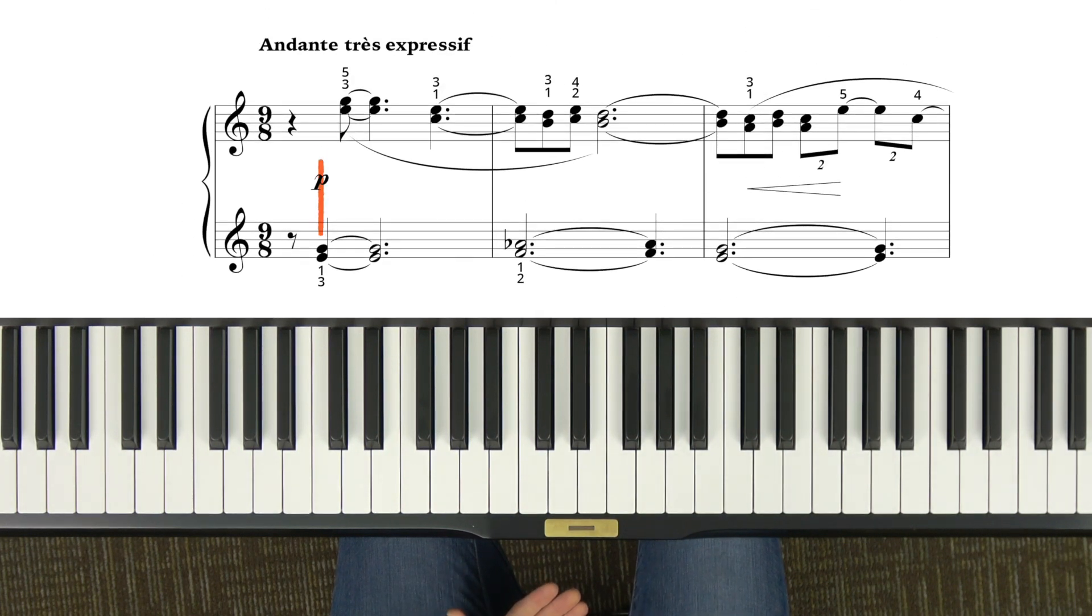So if you want to, you can draw vertical lines in your music where you can't really tell which hand is playing. Just draw a vertical line and you'll see.